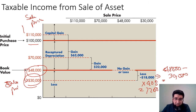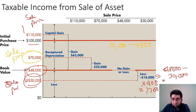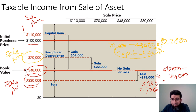It is also possible to have a sale price of $70,000. Since $70,000 is greater than the book value of $48,000, there is a gain of $22,000. However, since the sale price does not exceed the initial purchase price of $100,000, there is no capital gain — only recaptured depreciation of $22,000, which is the portion recovered within the range between book value and initial purchase price.